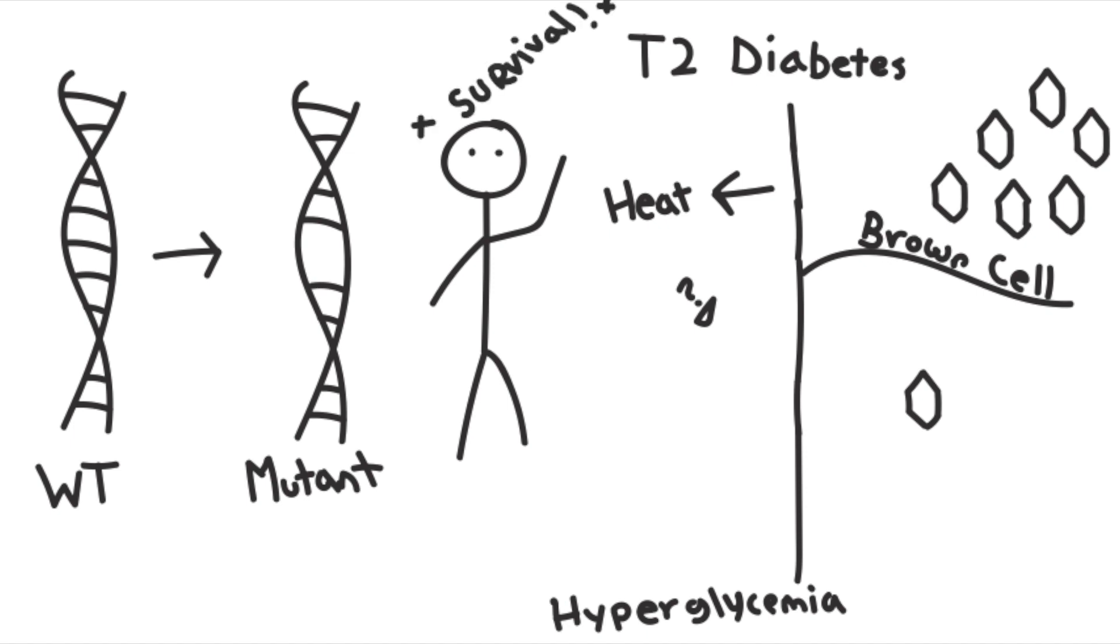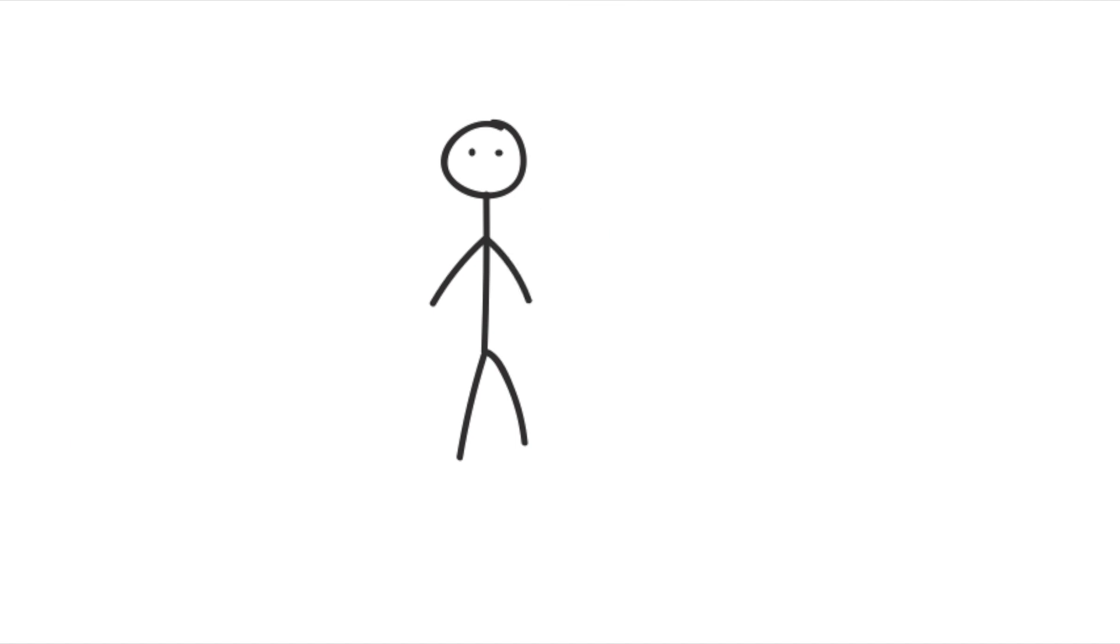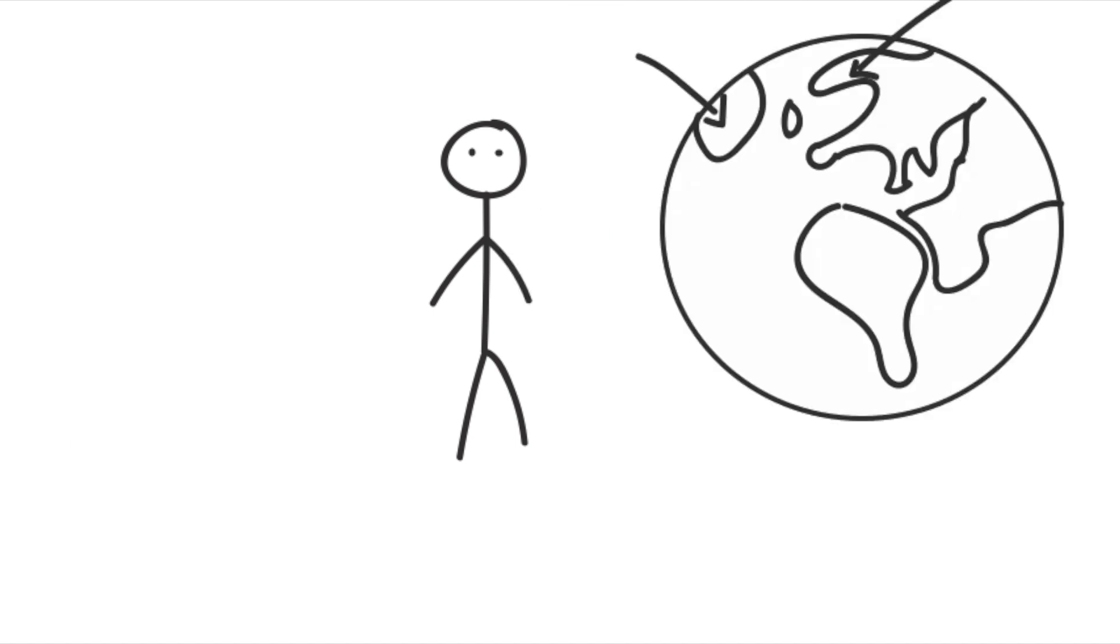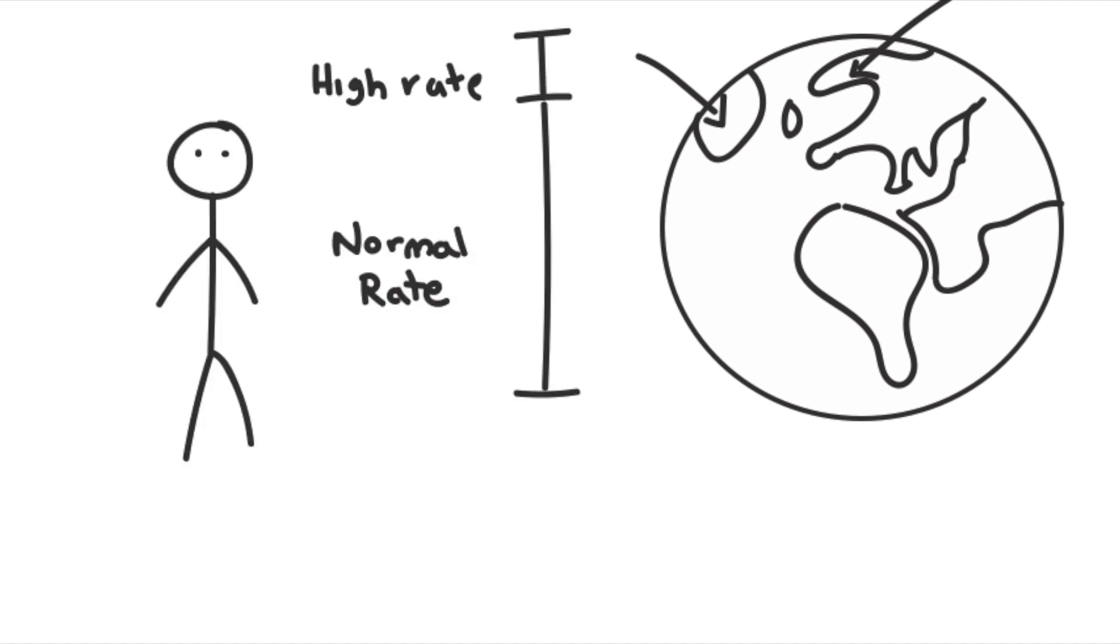Which is a good thing. If we flash forward to today, it turns out that Northern Europeans or descendants of Northern Europeans have some of the highest rates of type 2 diabetes. This is because they are more genetically prone to have type 2 diabetes. Perhaps today's disease is yesterday's savior.